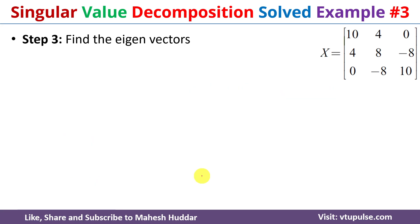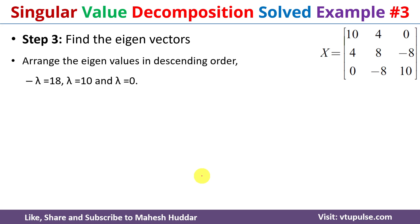Once we find the eigenvalues, the next step is to find the eigenvectors. Before finding them, we arrange the eigenvalues in decreasing order: first 18, then 10, then 0.